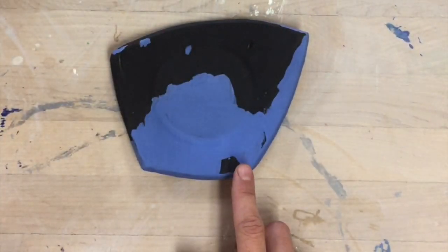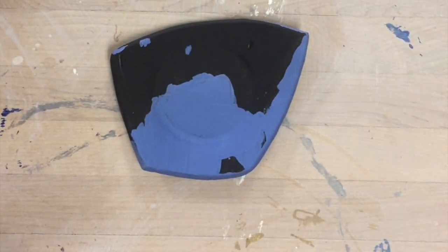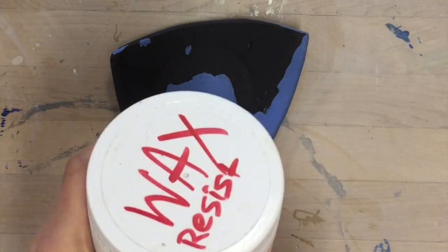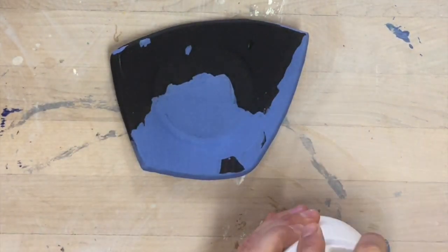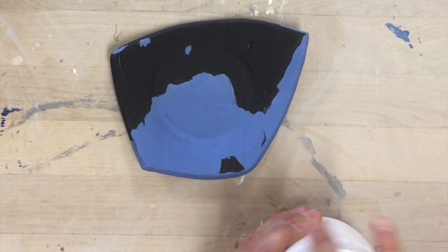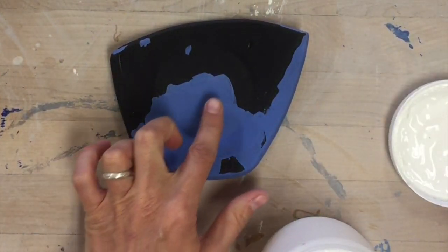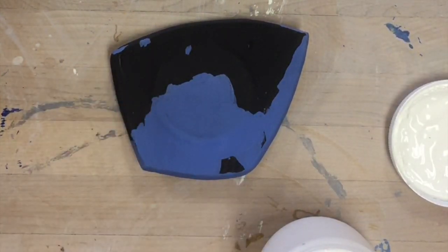So I need to make sure this is dry. Once it's dry, I'm going to take my wax resist. And the way that I can tell it's dry is that it's not shiny anymore, it's kind of got a matte look to it. This one's almost dry.